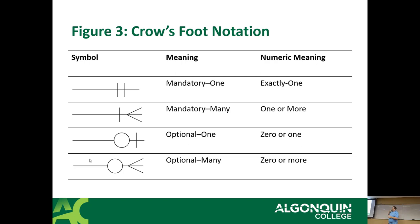Crow's foot diagrams represent the entities as boxes, relationships as lines, and there are different symbols at the end of each line that represent the cardinality. There are four sets of symbols. There's mandatory one, which means there's one and only one. A good example of that would be when you go to Loblaws and buy some groceries — when you finish paying, you get one and only one receipt. There might be many things on your receipt, but you have one receipt. Each item on the receipt is a child record belonging to one and only one receipt.